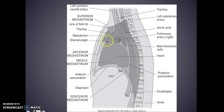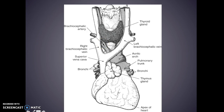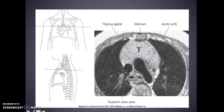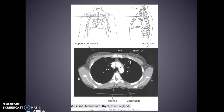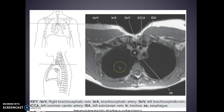Looking at it here versus here gives you an idea of where the thymus sits in the mediastinum. This is an enlarged thymus — this patient clearly is having some issues with their thymus. Manubrium, your thymus is there, your esophagus, trachea, aortic arch, and your superior vena cava.